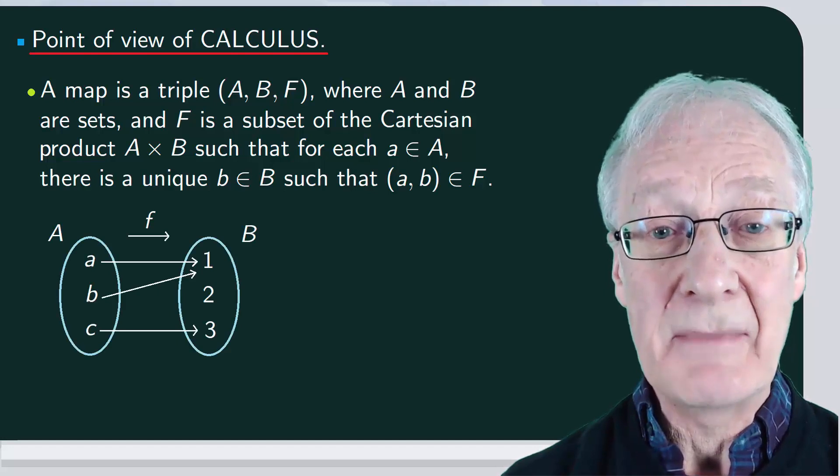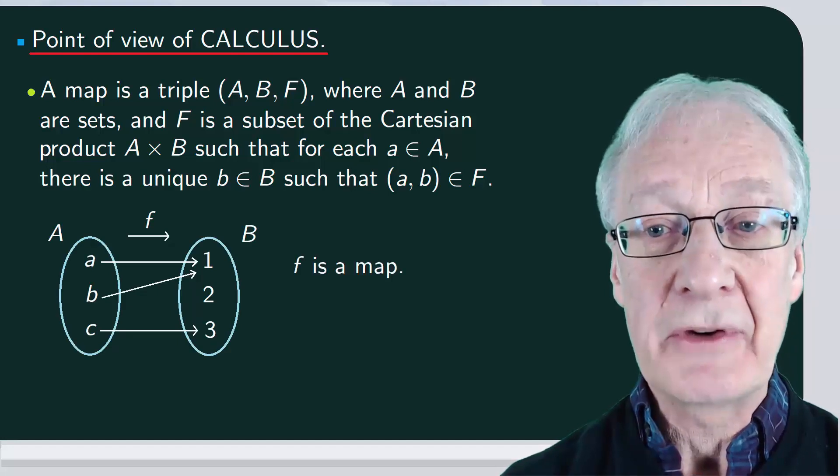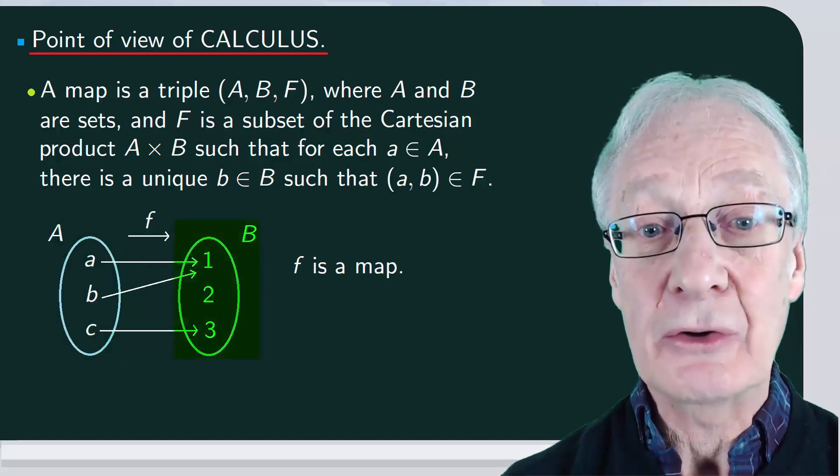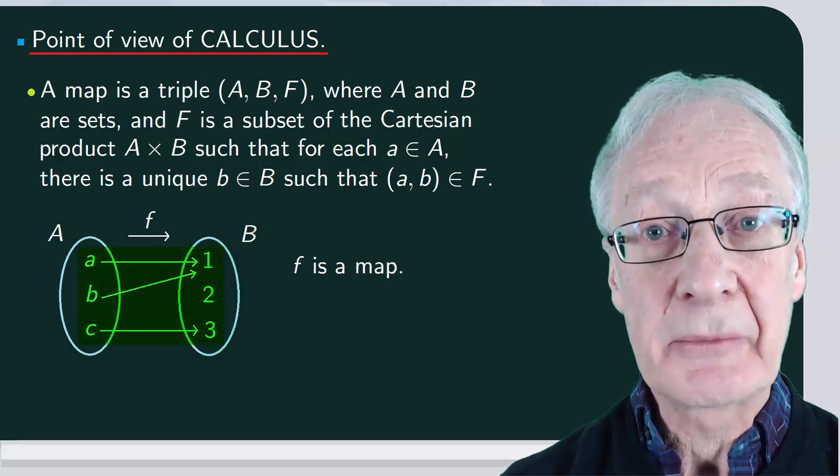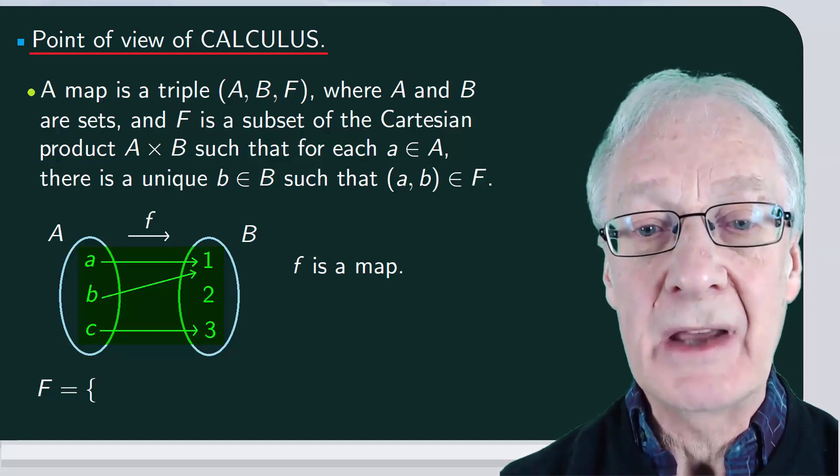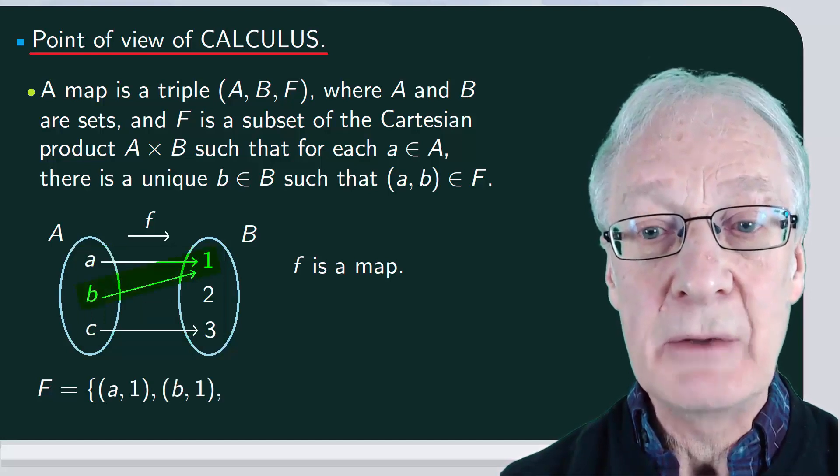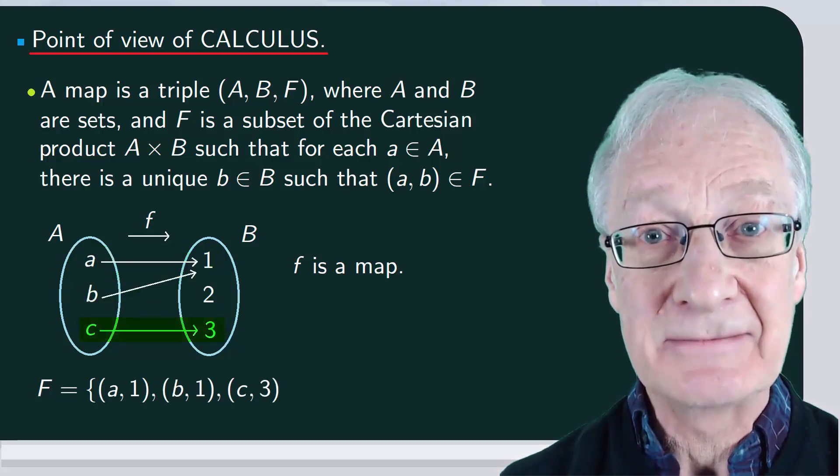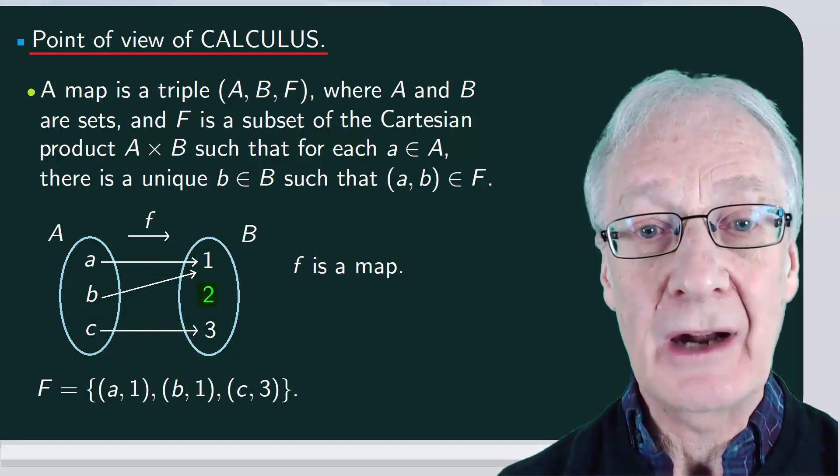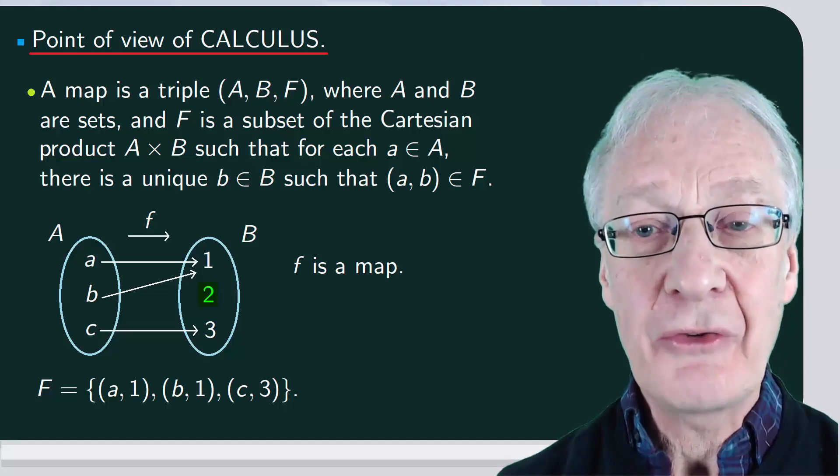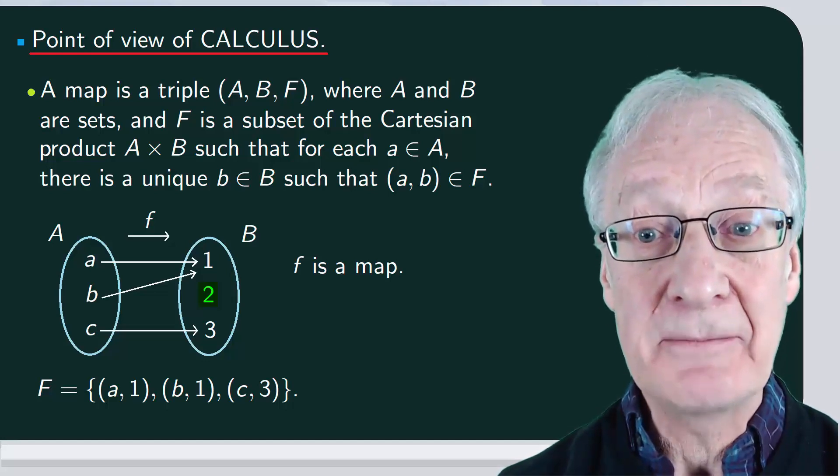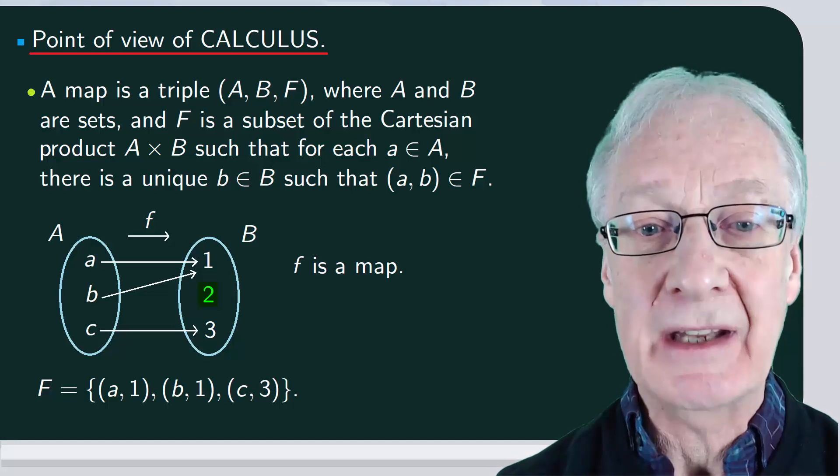For example, here we have a map. Notice that there are three components: an initial set or domain a, a final set or codomain b, and the subset f of the Cartesian product a times b. f is the set formed by the pairs a1, b1, and c3. Now, ask yourself, what about the two that no arrow reaches?